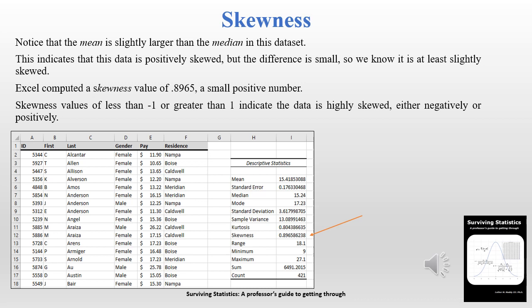We can tell that the data is skewed by simply looking at the mean and the median — they're not the same value, so we know there is some skewness. However, the actual value of 0.89 is not a large number. We're really not truly concerned about skewness unless it's less than negative one or greater than one, which would indicate a highly skewed data set.